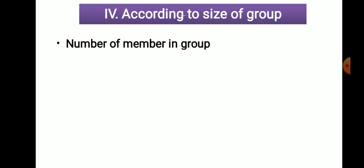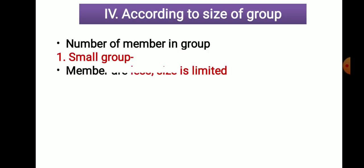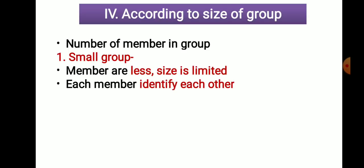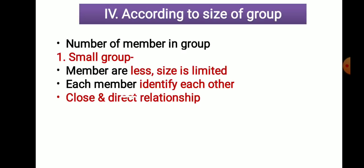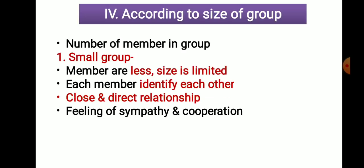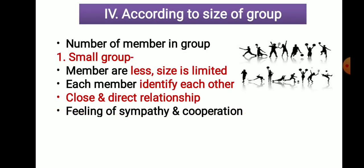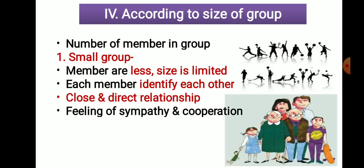The next classification is by size of group, which depends on the number of members. In a small group, the number of people is limited, and each member identifies every other member personally. Close and direct relationships exist among members. There is a feeling of sympathy, cooperation, and warmth among members. Examples are family, sports club, youth club, and friend circle.